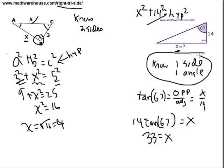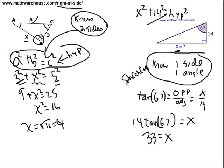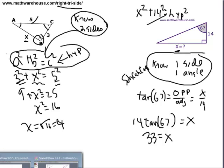Alright, so you know one side and one angle - it's SOHCAHTOA time. You know two sides - Pythagorean theorem time. Alright, so let's try some more practice.